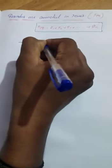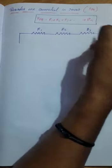How do we get this kind of formula? For example, take three resistors. These three are connected in series, as shown in figure 1. This is resistor 1, indicated with R1; this is indicated with R2; this is indicated with R3. These three are connected in series.